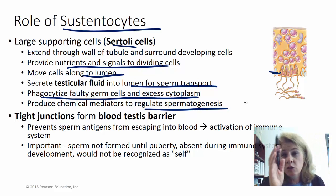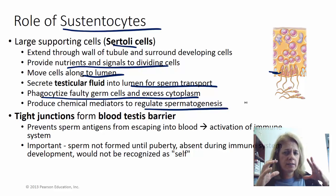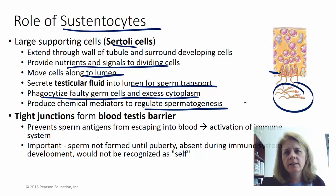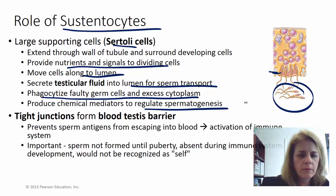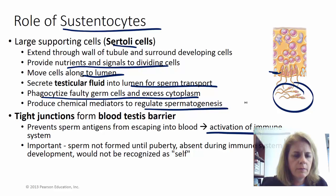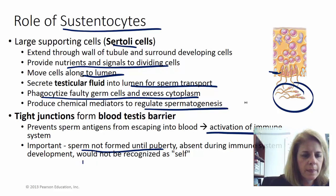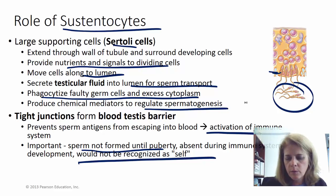The Sertoli cells also form a blood-testis barrier. The sperm being produced between these cells are actually isolated from the male's own body. This is important because sperm are not genetically identical to the male — the body might recognize them as foreign and try to destroy them. Since sperm aren't formed until puberty, after the immune system has already established self versus non-self, this barrier protects the sperm from the male's own immune system.